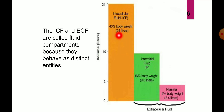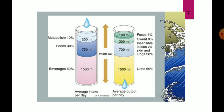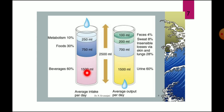In this diagram you can see the various distribution of intracellular fluid and extracellular fluid. These are called the fluid compartments because they behave as distinct entities. Intracellular fluid constitutes 40% of body weight, interstitial fluid 16%, and plasma around 4%, which is in the blood. These together form the extracellular fluid. The input and output of water is almost equal to 2,500 ml per day. The average intake is 2,500 ml, formed by intake of fluids — 1,500 ml — from foods around 750 ml, and from metabolism of various biomolecules, 250 ml.